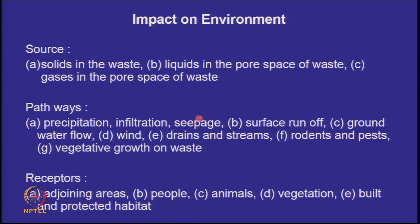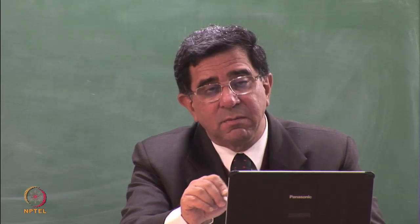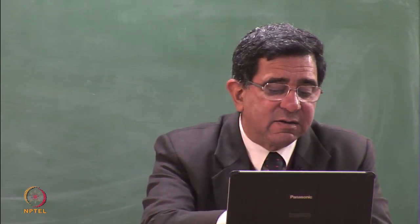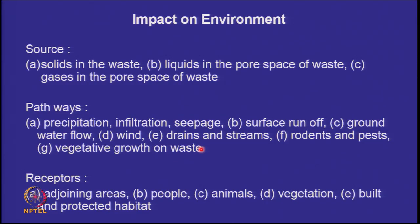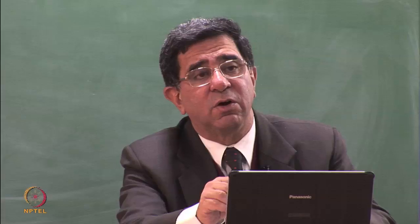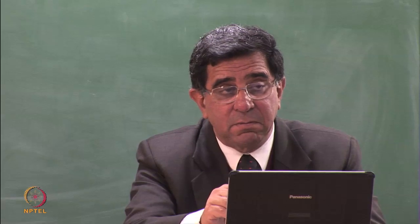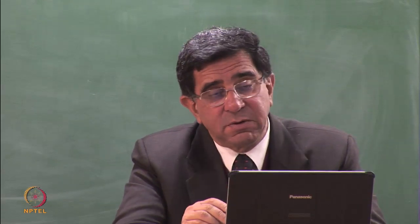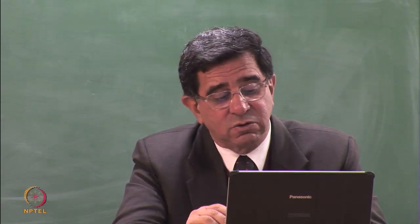The pathways include precipitation, infiltration, seepage — the leachate will cause contamination. Surface runoff passing partly through or over the waste can cause contamination. Groundwater flow is a pathway. Wind can carry bad odour and gases generated from a waste dump. Drains and streams carry the surface runoff. Rodents and pests, which are much larger in numbers on waste dumps than in the natural environment, also become pathways for contamination. If vegetative growth on top of the waste enters the human or animal consumptive cycle, that is also a problem.